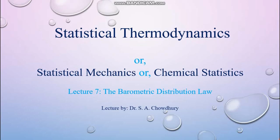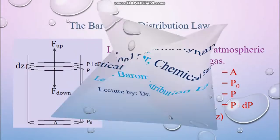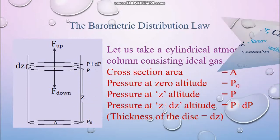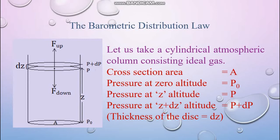In the statistical thermodynamics chapter, the next topic is the barometric distribution law, where pressure as a function of altitude will be determined. We consider a cylindrical atmospheric column consisting of ideal gas — the assumption being that the gases are treated as ideal.